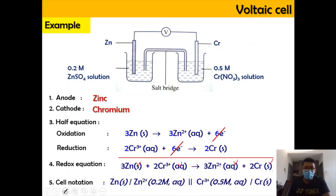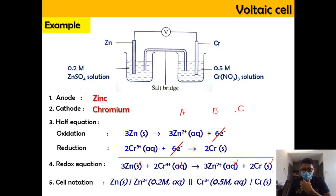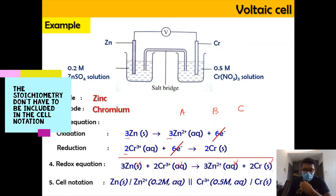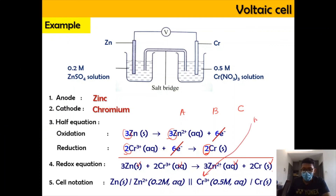For the cell notation of the zinc-chromium cell, using the ABC rule: Zn(s) | Zn²⁺(0.2 M, aq) || Cr³⁺(aq) | Cr(s). You don't have to include the stoichiometric numbers in the cell notation.